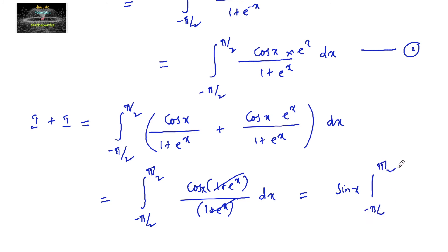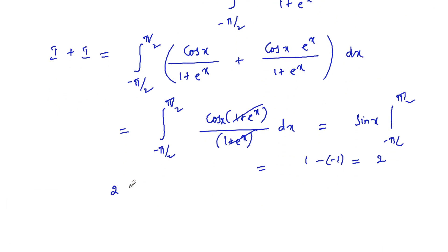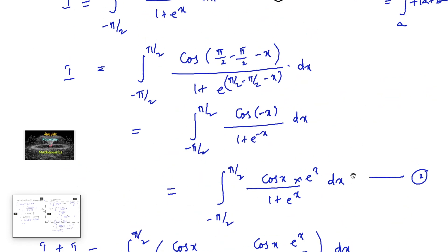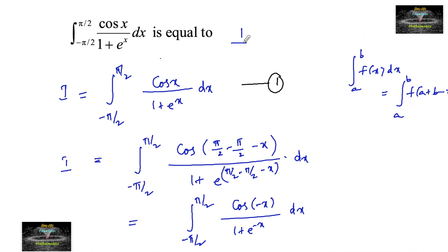Evaluating sin(x) from minus pi by 2 to plus pi by 2: sin(90°) is 1, minus sin(minus 90°) which is minus 1, giving 1 plus 1 equals 2. So 2I equals 2, which implies I equals 1. Therefore the answer to this question is 1.